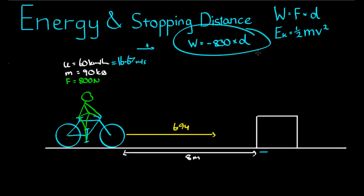The work done by the brake is still equal to negative 800 multiplied by the distance it takes for this bike to stop. And if the distance is greater than 8 meters, it means the bike will impact there.